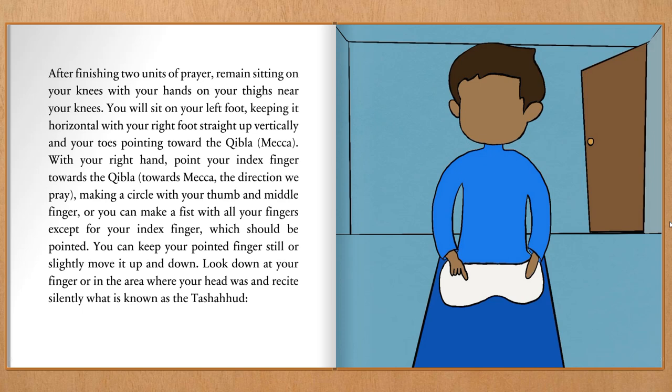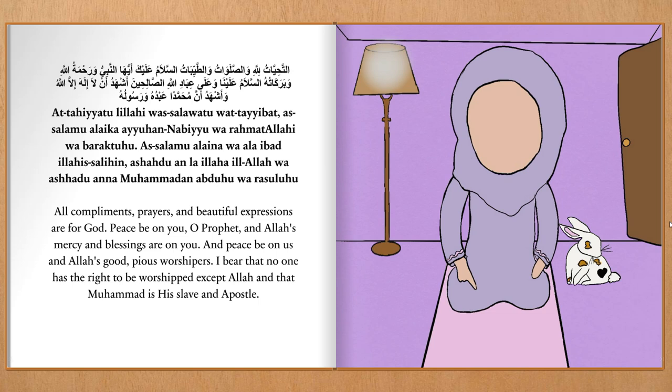Recite silently what is known as the Tashahood: "At-tahiyyatu lillahi wa s-salawatu wa t-tayyibat. As-salamu alayka ayyuhal nabiyu wa rahmatullahi wa barakatuhu. As-salamu alayna wa ala ibadillahi s-salihin. Ashhadu an la ilaha illallah wa ashhadu anna Muhammadan abduhu wa rasooluh." All compliments, prayers, and beautiful expressions are for God. Peace be upon you, O Prophet, and Allah's mercy and blessings are on you. And peace be on us and Allah's good, pious worshippers. I bear witness that no one has the right to be worshipped except Allah and that Muhammad is His slave and apostle.